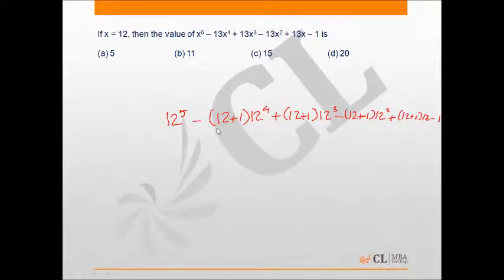So this will give me that this value is equal to 12 power 5 minus 12 power 5 minus 12 power 4 plus 12 power 4 plus 12 cube minus 12 cube minus 12 squared plus 12 squared plus 12.